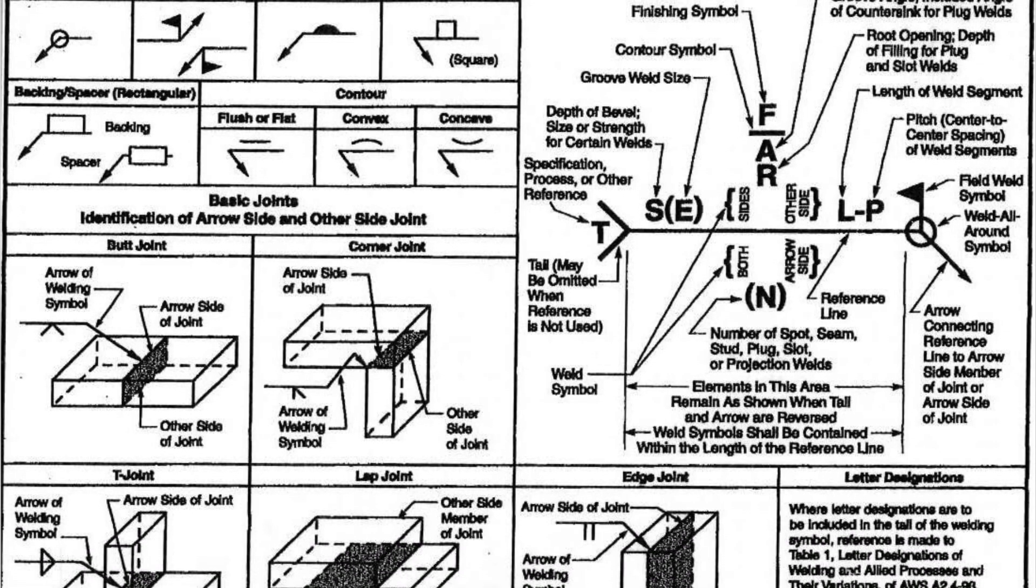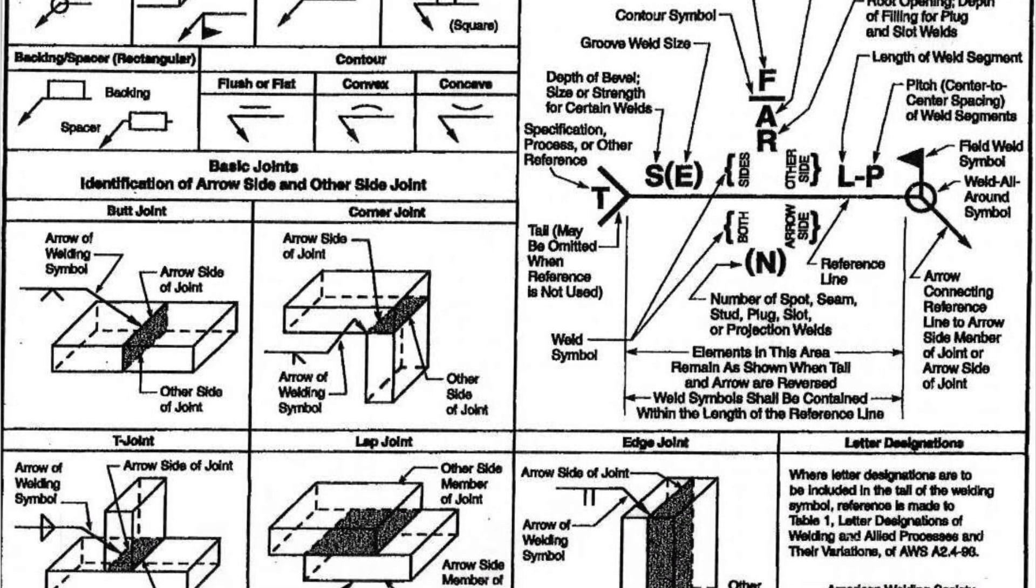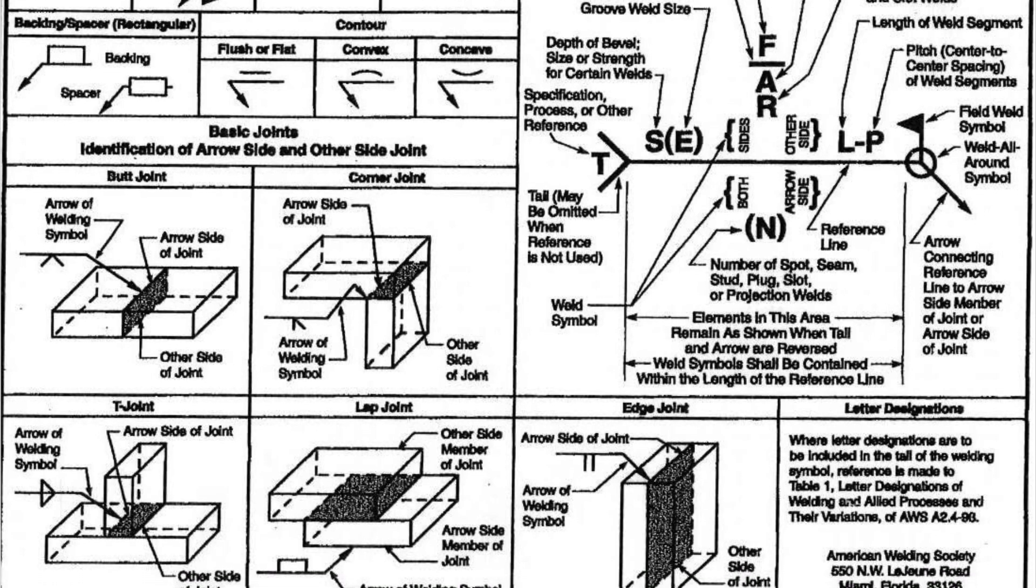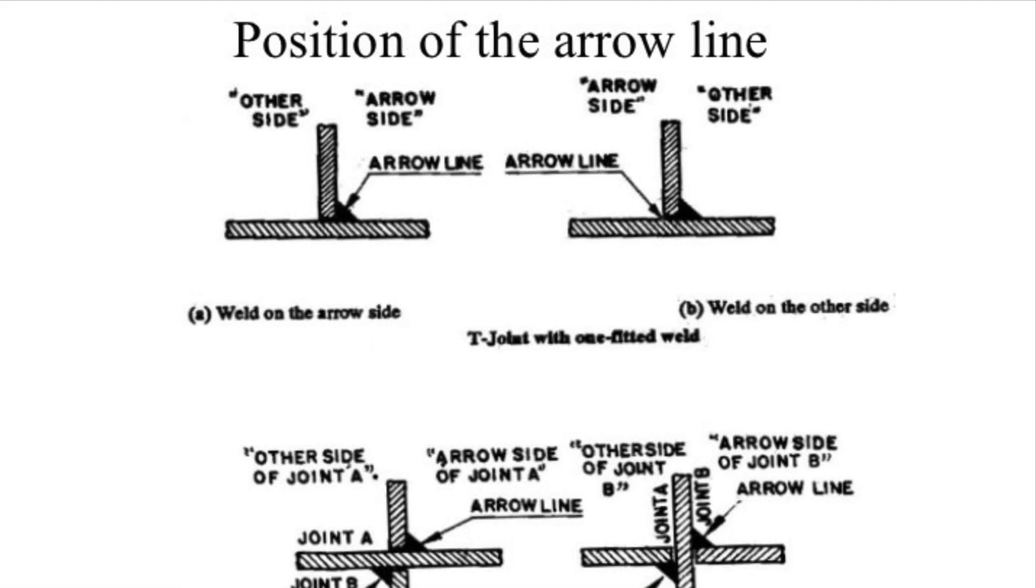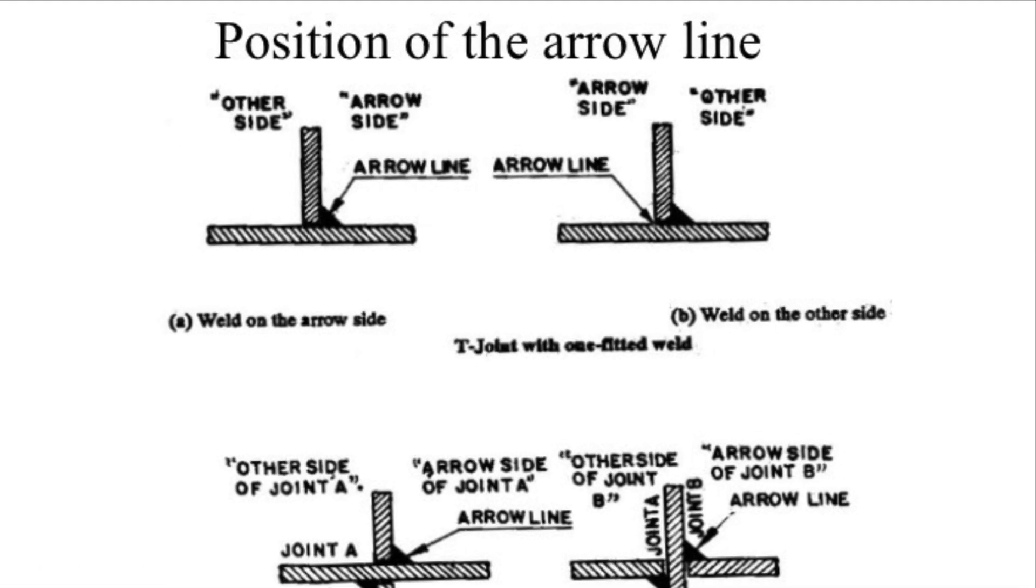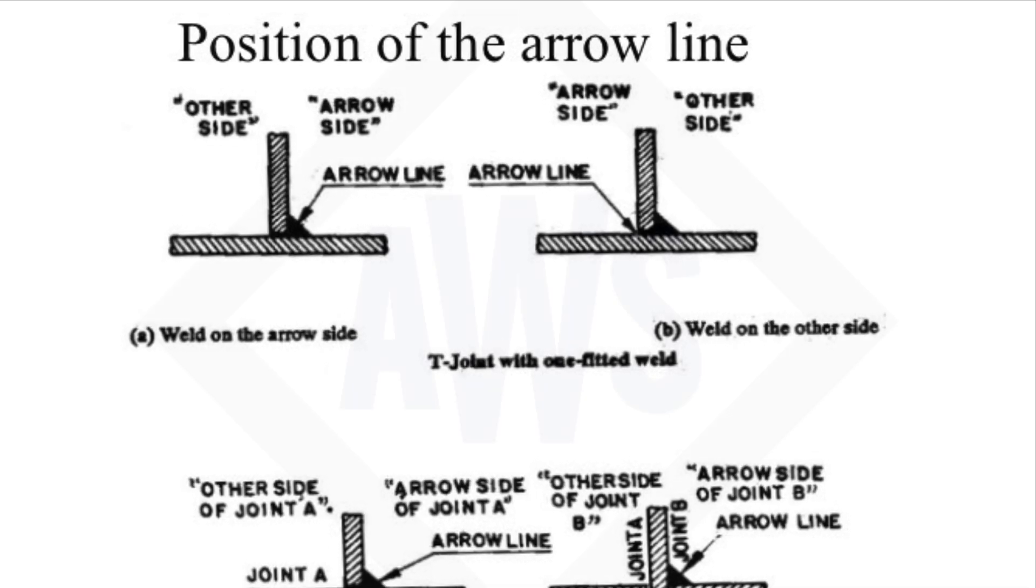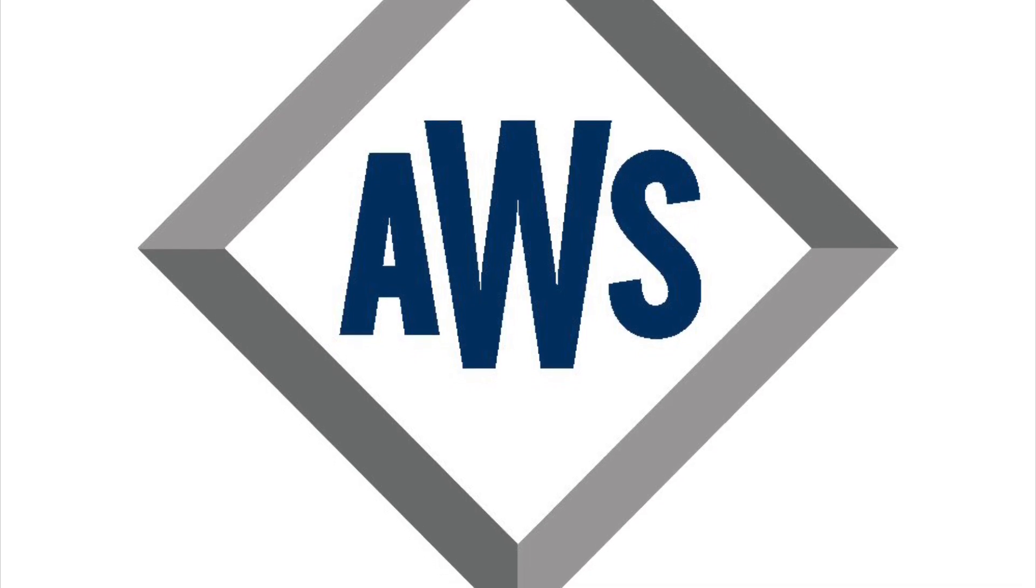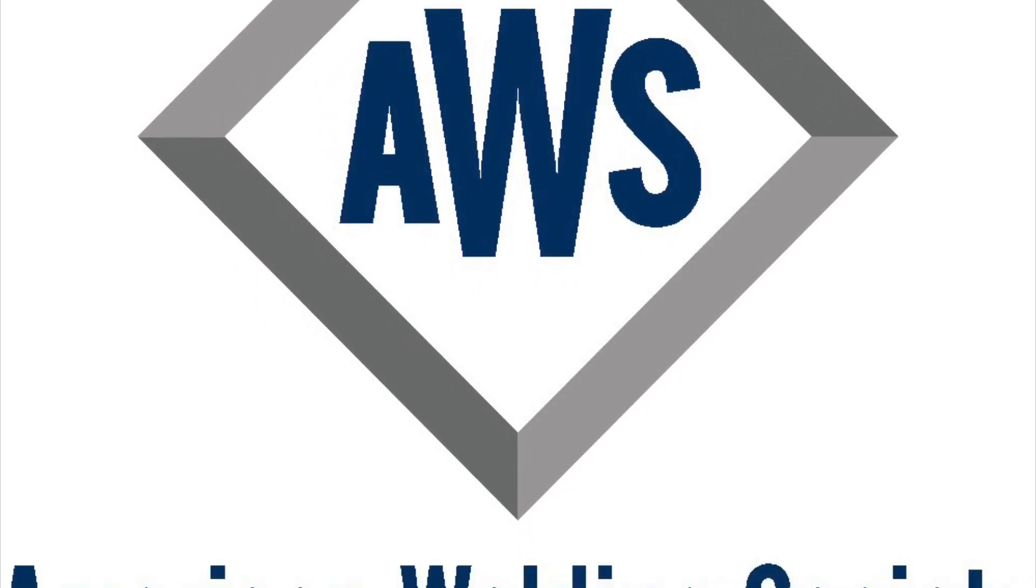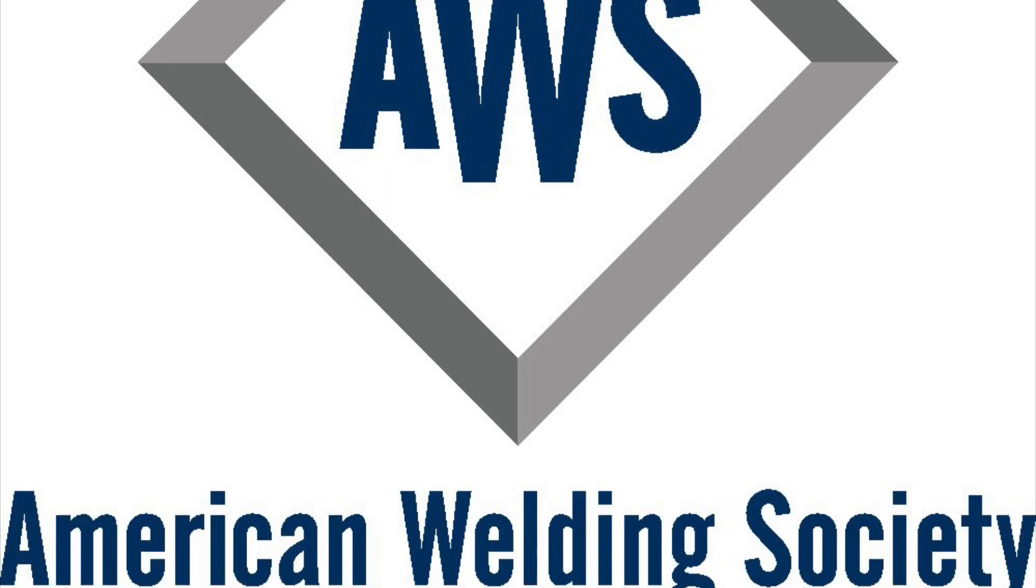Welding symbols are a communication bridge between designer and welder. These symbols are used to convey job details such as welding thickness, weld length, type of weld, etc. in terms of symbols. Normally these symbols are designed by American Welding Society.